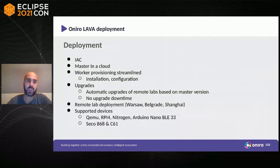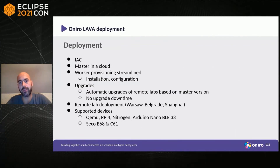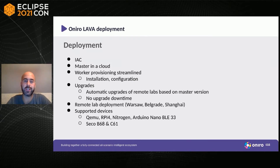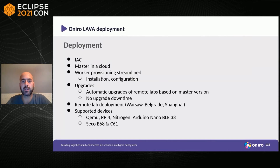For the Oniro development CI/CD cycle, LAVA deployment is done completely as infrastructure-as-code using Ansible and Docker images. We have a LAVA server running in the cloud, with workers provisioned in a completely streamlined manner — installation and configuration are automated. Remote labs upgrade automatically based on the master version.